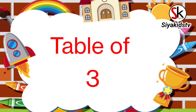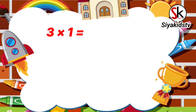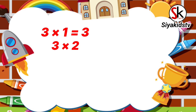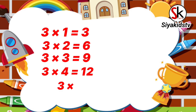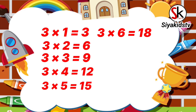Table of 3. 3 times 1 is 3, 3 times 2 is 6, 3 times 3 is 9, 3 times 4 is 12, 3 times 5 is 15.